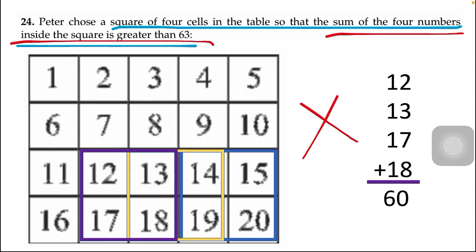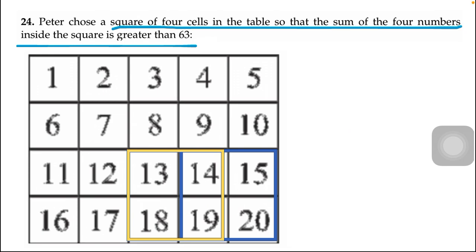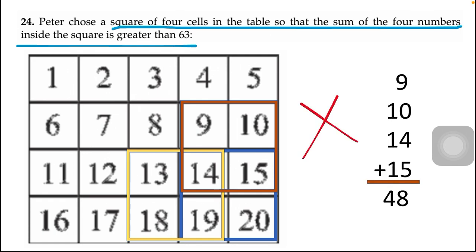Now moving to the upper side: 9, 10, 14, 15. After adding these numbers the answer is 48. This one is also the wrong one.